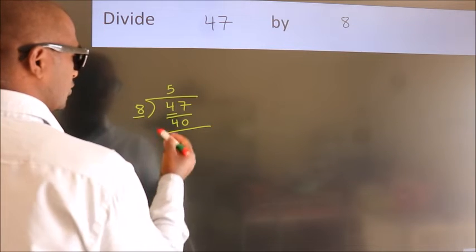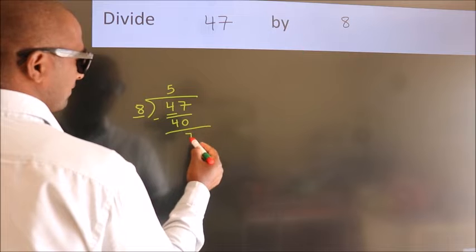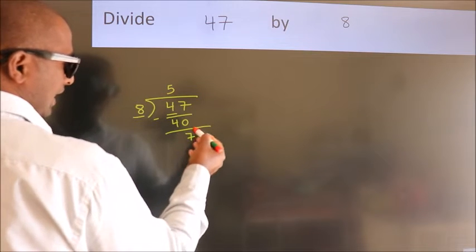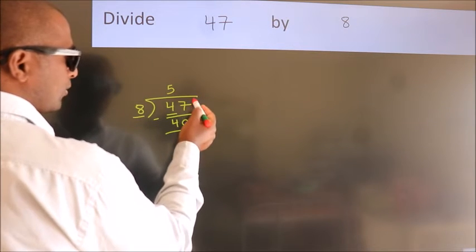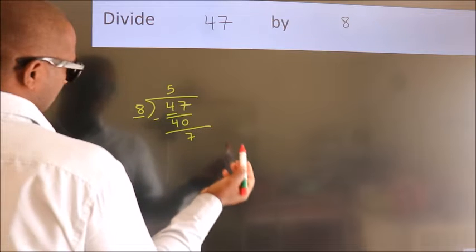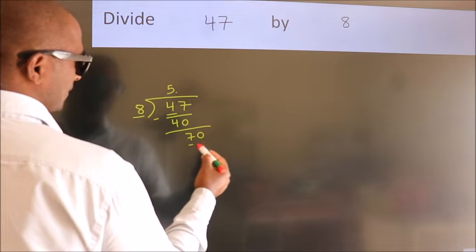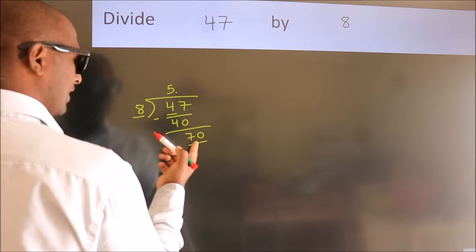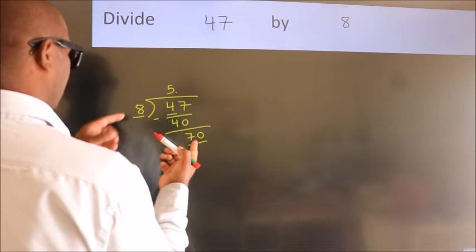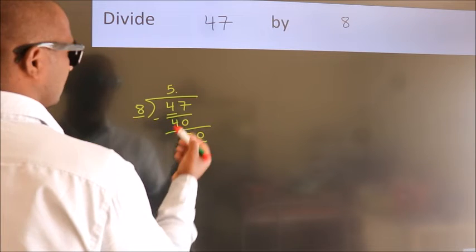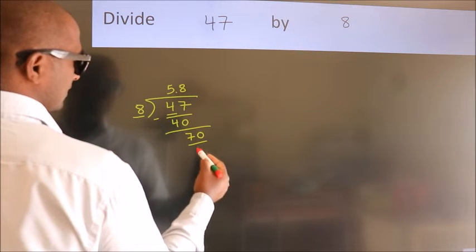Now, we should subtract. We get 7. After this, no more numbers to bring it down. So what we do is, we put dot take 0. So, 70. A number close to 70 in 8 table is 8 eights 64.